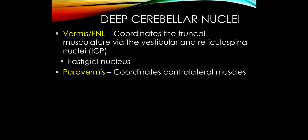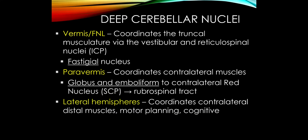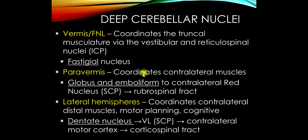Starting with the vermis and flocculonodular lobe: this coordinates truncal midline musculature via the vestibular and reticulospinal nuclei, which then control the vestibulospinal and reticulospinal tracts. This communication occurs through the inferior cerebellar peduncle; the nucleus is the fastigial nucleus. Moving out to the paravermis: Purkinje cells communicate via the globose and emboliform to the contralateral red nucleus, through the superior cerebellar peduncle, to influence the rubrospinal tract.